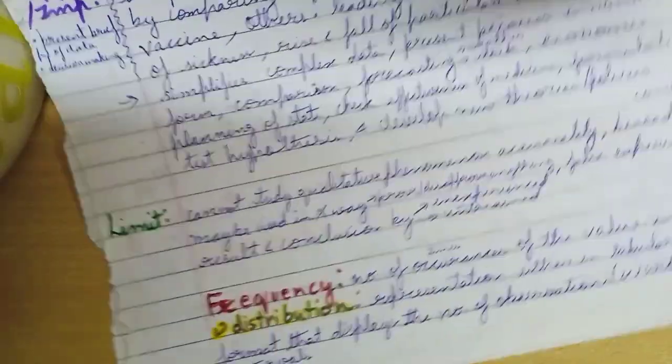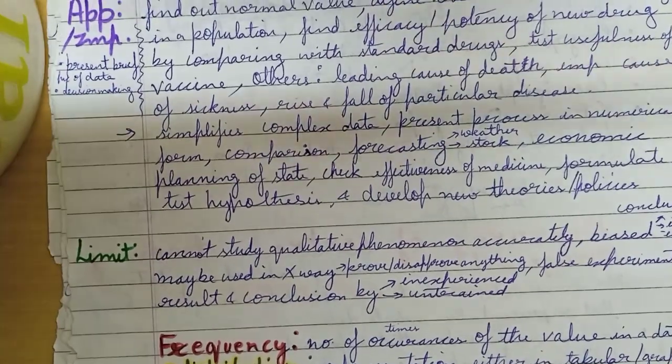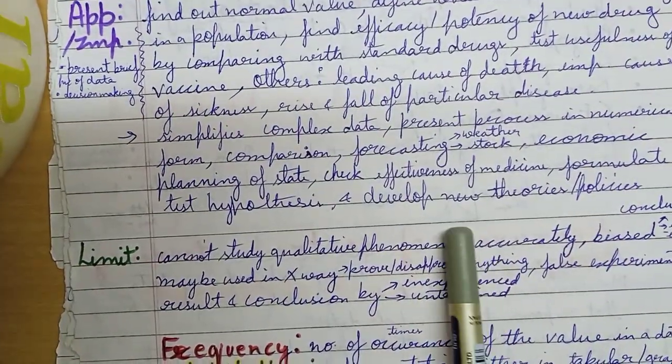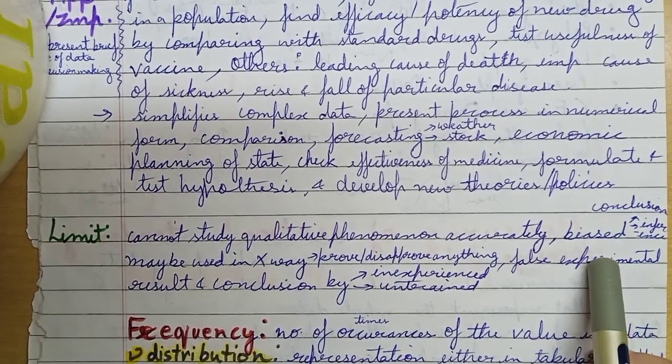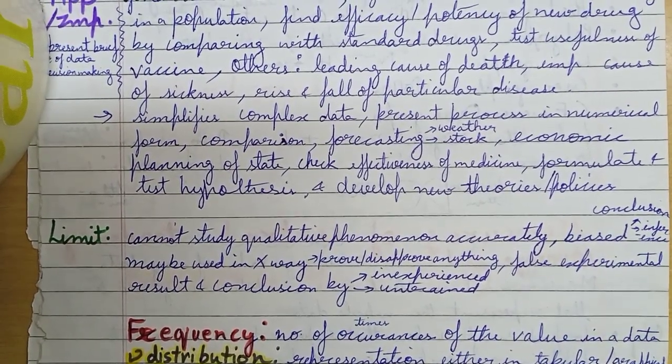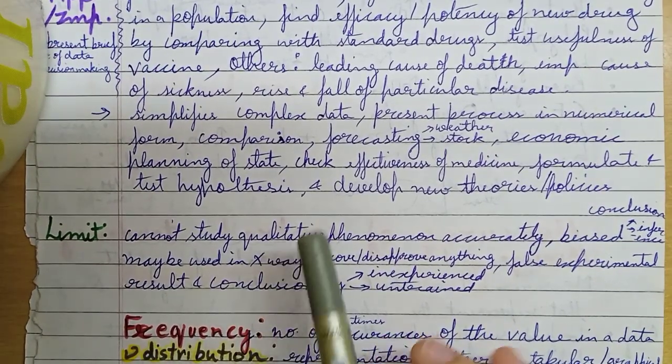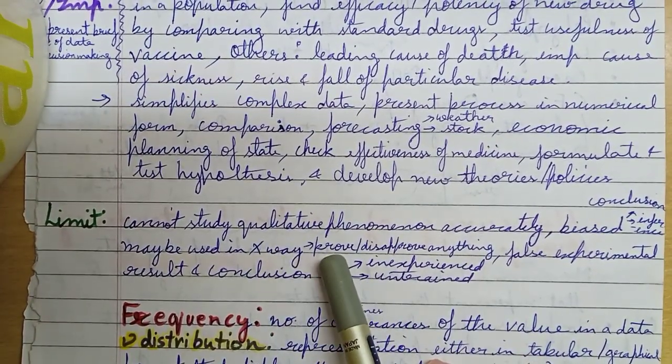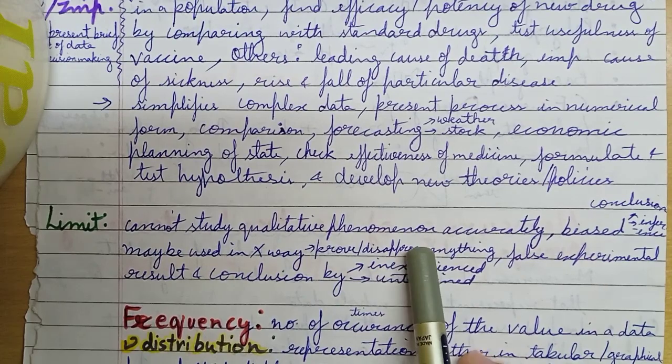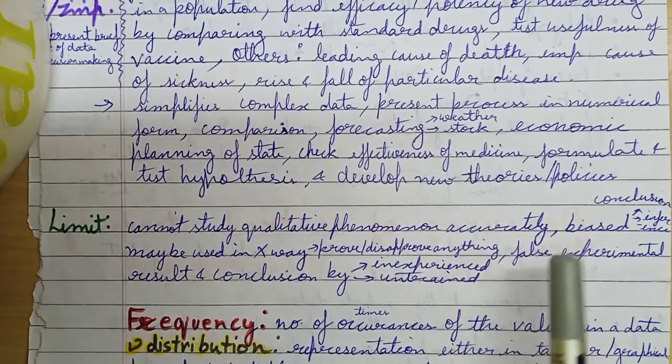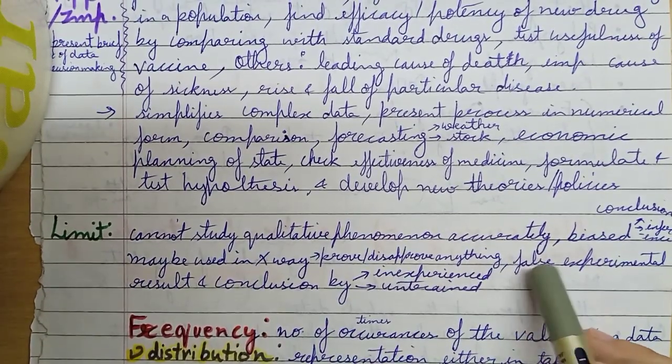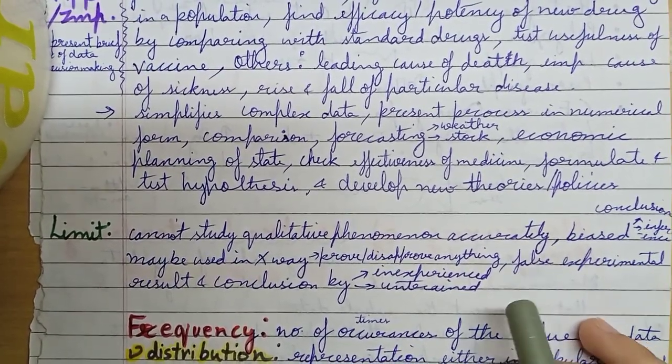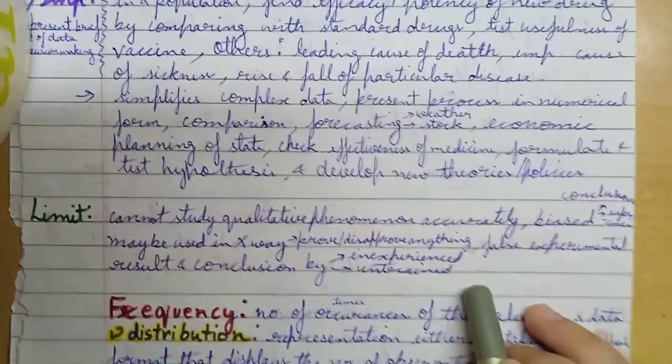Then there are some limitations. We can't study qualitative phenomena accurately. This can lead to biased conclusions or inferences, and we can use it in the wrong way. So we can prove or disprove or get false experimental results or conclusions if done by an inexperienced or untrained person.